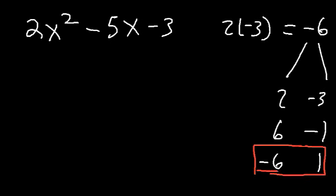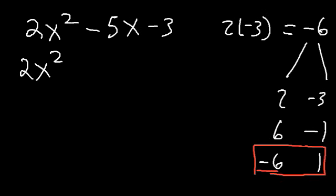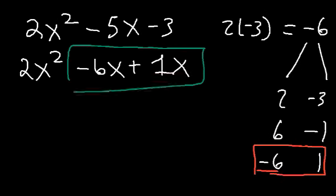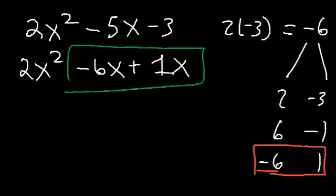Once you find those two numbers, you want to replace the middle term — the negative 5x — with negative 6x plus 1x. As you can see, the value of the expression remains the same: negative 6x plus 1x is equivalent to negative 5x.